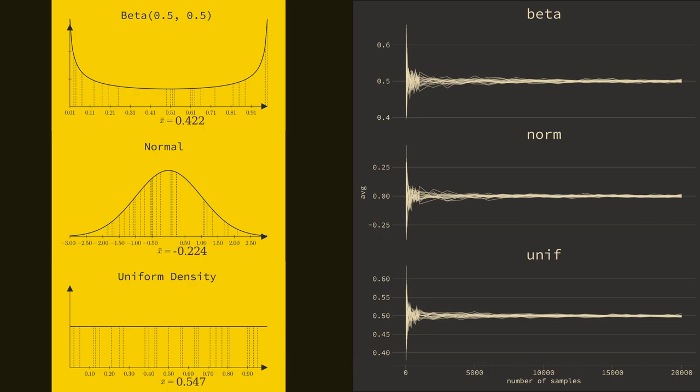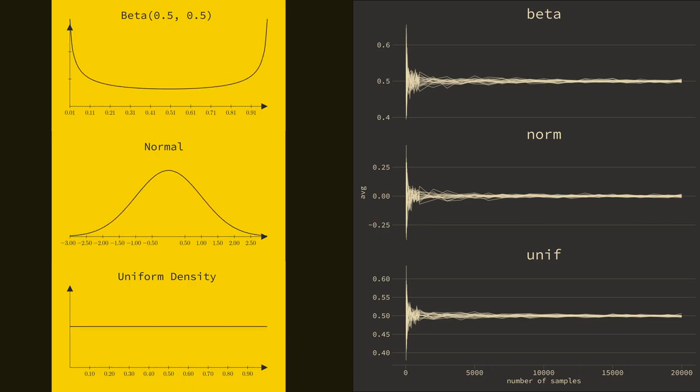Large enough samples from any distribution will end up looking like a normal distribution. The exception is the Cauchy distribution.